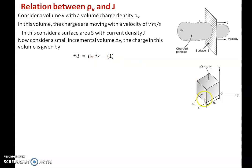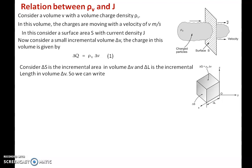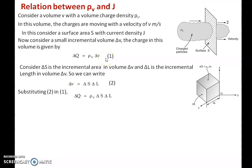I am considering a small surface area that is part of delta V as delta S, and the incremental length as delta L. I can write the volume as delta V, which is equal to the product of the surface area and the length — that is, delta V equals delta S into delta L. Substituting equation 2 into equation 1, delta Q equals rho V into delta S into delta L.